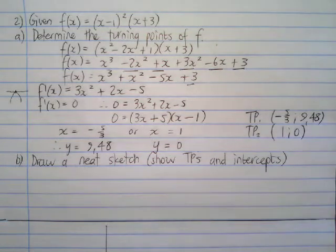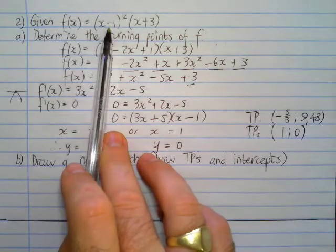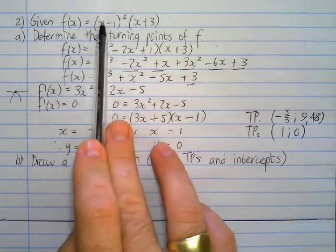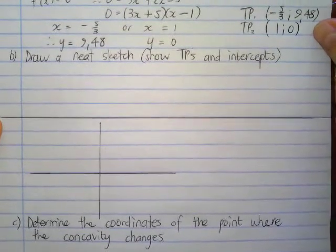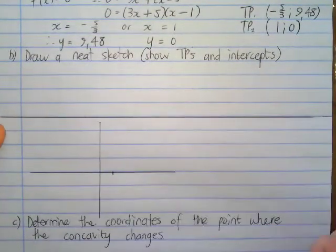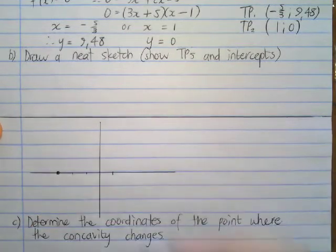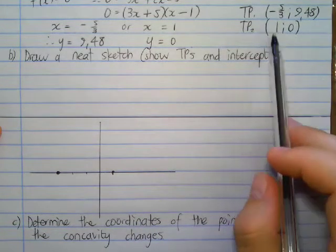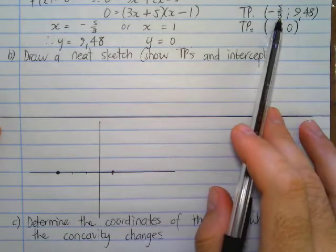Part B says draw a neat sketch, show the turning points and their intercepts. Because our original function was factorized for us, we know that the x-intercepts are going to be at 1 and at -3. So we can go up a little bit here. So we're going to go to 1 and we're going to go to -1, 2, 3.